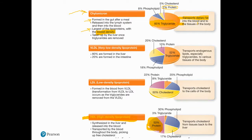HDL has kind of an opposite job. HDL is made by the liver and released into the blood. Its job is to pick up cholesterol from different body cells that no longer need it. HDL is primarily protein, and whatever cholesterol it picks up, it brings back to the liver — to be turned into bile or ultimately eliminated by the digestive system.